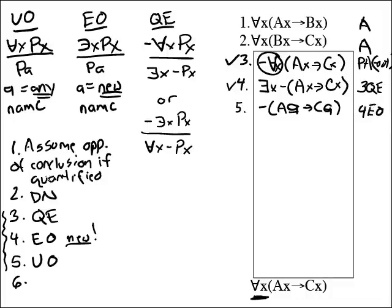And so that's going to be 4EO. In fact our whole, the sequence of the rules down here is motivated by the fact that we want to do the existential out early on so we can get these new names into our proof. Okay, so now we're on to universal out.